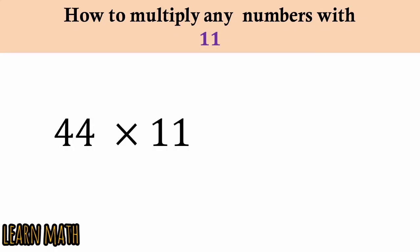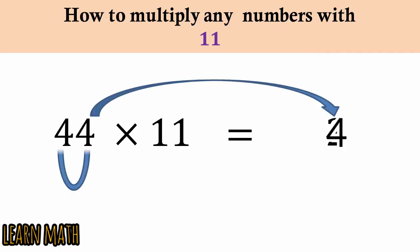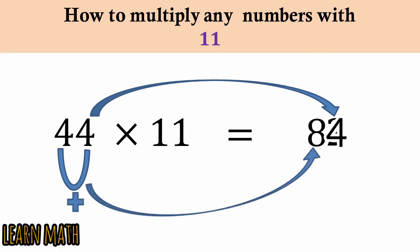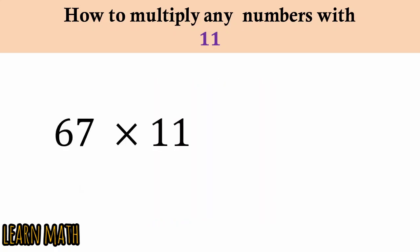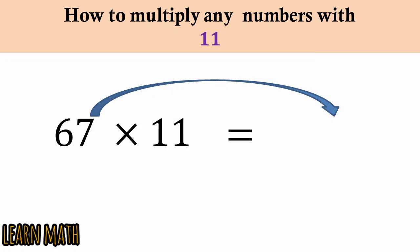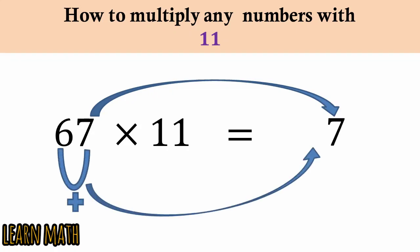The second example is 44 multiplied by 11: 4 here, 4 plus 4 is 8, then write 4 here — so 484 is the answer. The third example is 67 multiplied by 11: write 7 here, then 6 plus 7 is 13, so put 3 here and carry 1, then 6 plus 1 is 7 — so 737 is the answer.